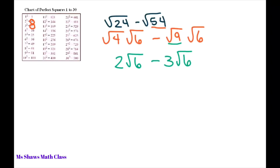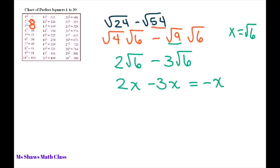These are like terms — it's like saying 2x minus 3x equals negative x, where x equals the square root of 6. So the final answer is negative square root of 6.